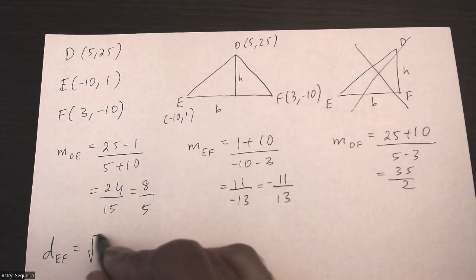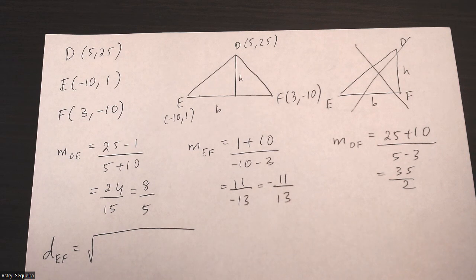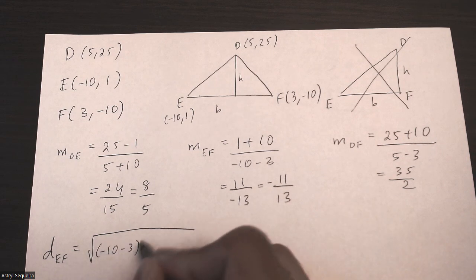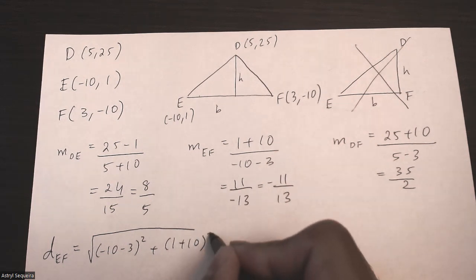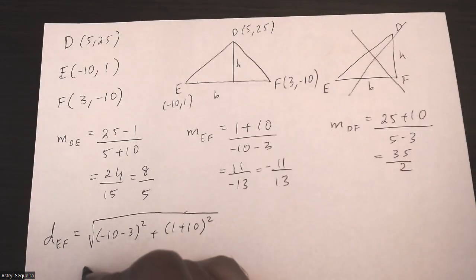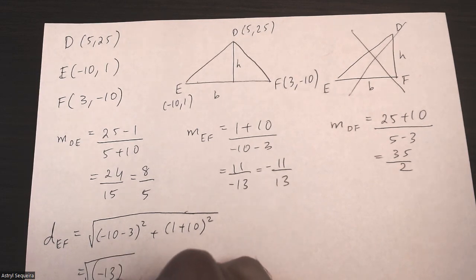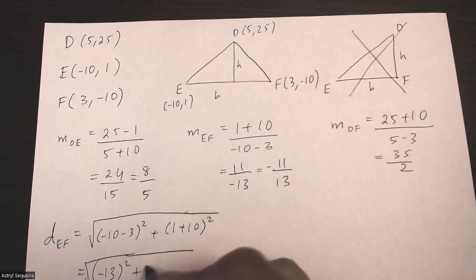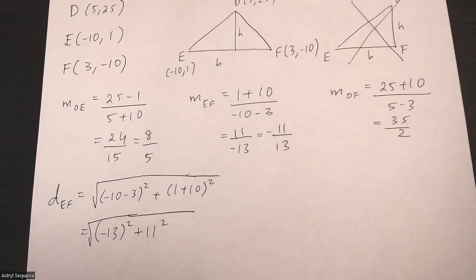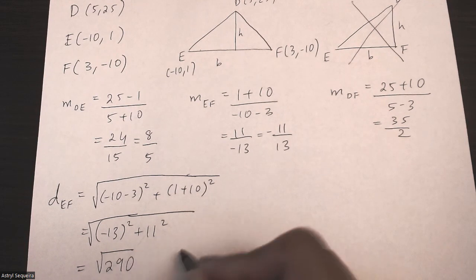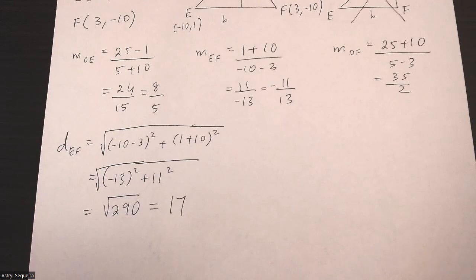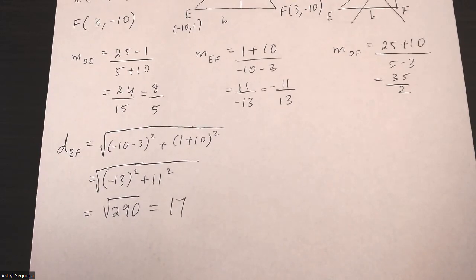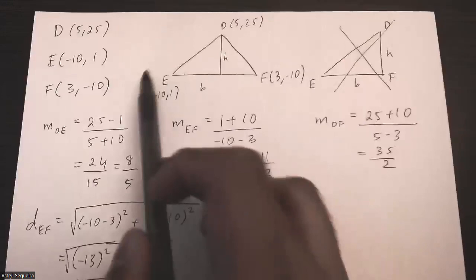I'll substitute these points into the distance formula: the square root of (negative 10 minus 3) squared plus (1 plus 10) squared, which is the square root of negative 13 squared plus 11 squared, giving the square root of 290, approximately 17.02. I'll round that to 17.